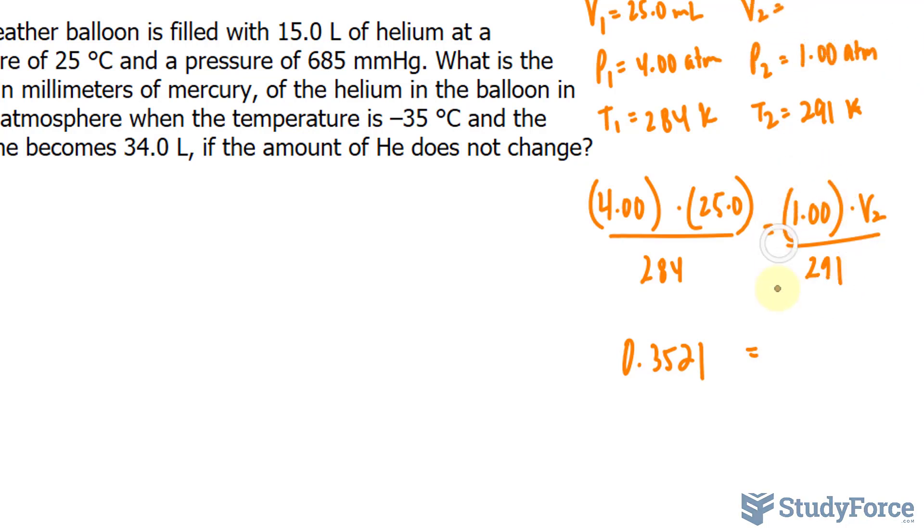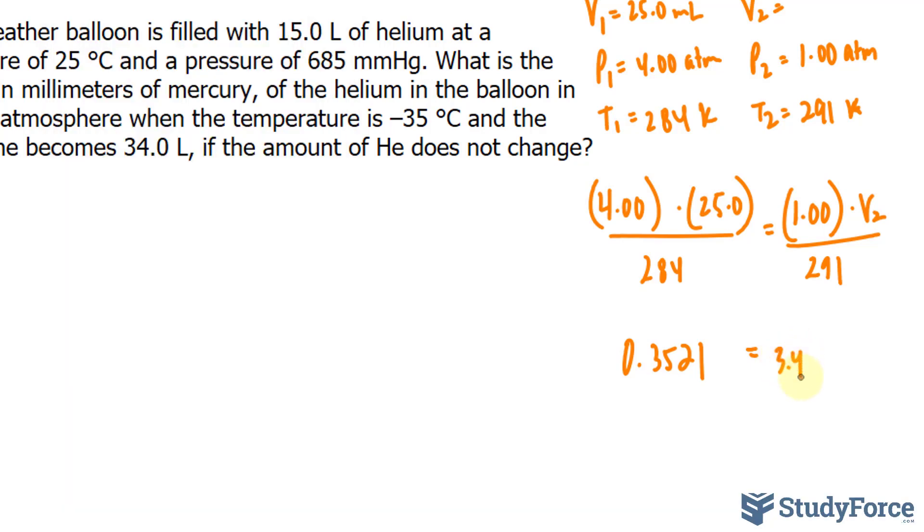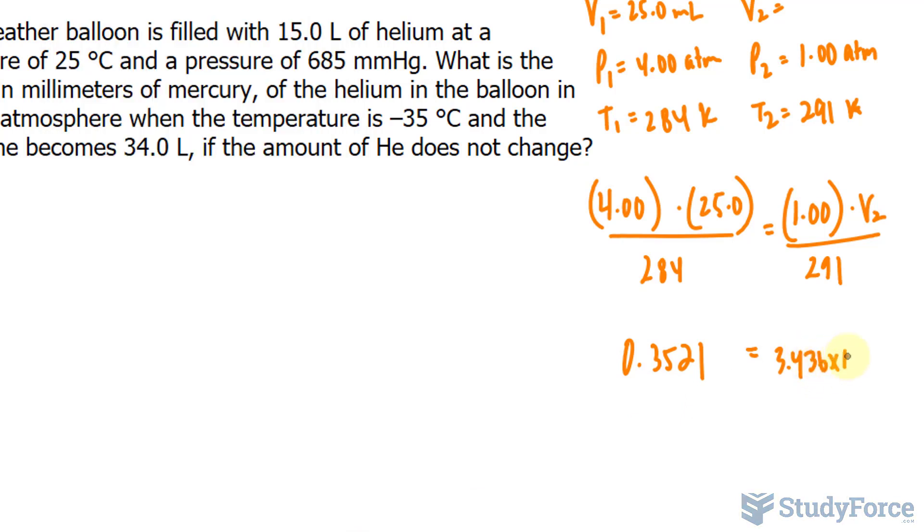And on the right side, I'll evaluate these two numbers. 1.00 divided by 291. And I'll just write down this number and keep a few digits. We don't want to round just yet. Or you can write it as the fraction if you are comfortable with the fraction version. So 3.436 times 10 to the power of negative 3 V₂.